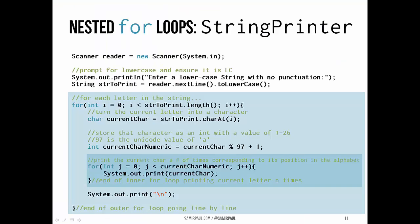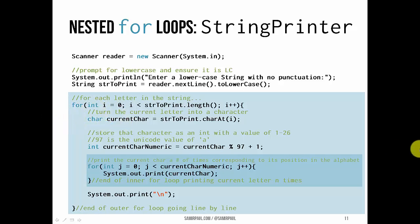One more example — a program called string printer. We make a new scanner and prompt the user for a lowercase string. We ensure it's lowercase by calling reader.nextLine().toLowerCase(). Then we iterate through each letter of the string — that's what the outer for loop does, starting i at 0 and going until we reach the length of the string. For each character, we turn the letter at index i into a character and store it in a variable called currentChar.